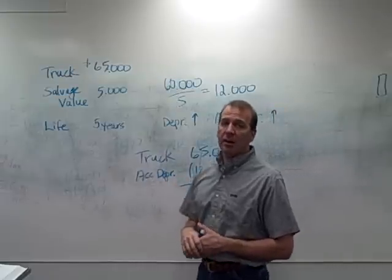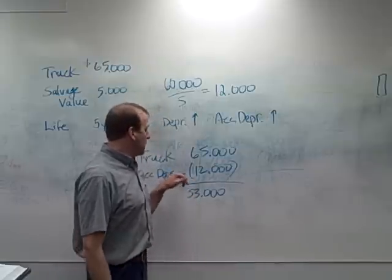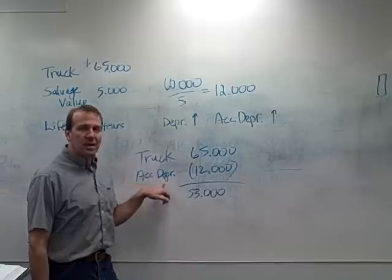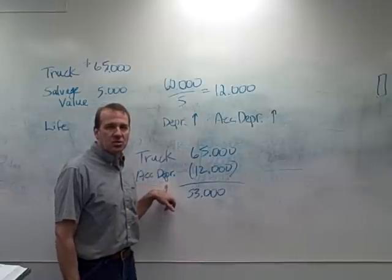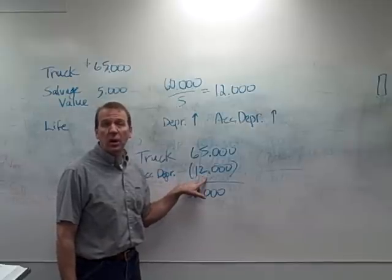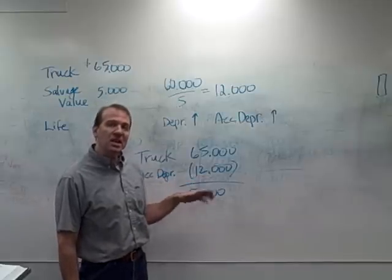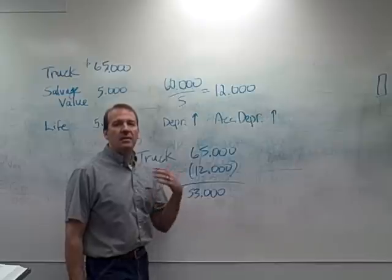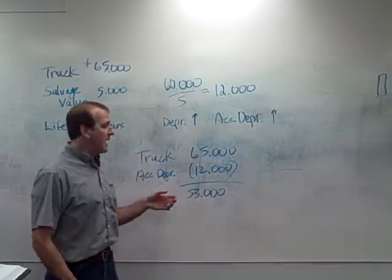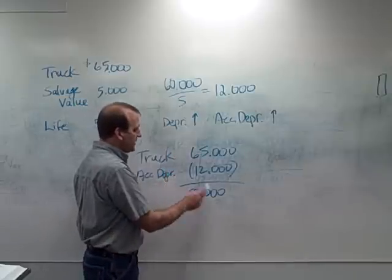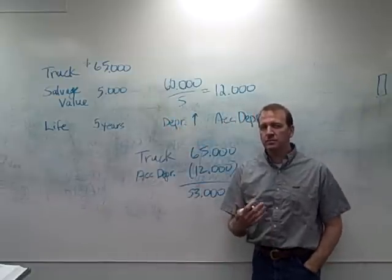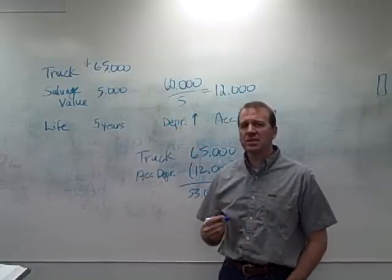The accumulated depreciation account offsets the truck balance. So in year one, with $12,000 of depreciation, the book value — the net realizable value — is $53,000. People like to see the value of the truck and the accumulated depreciation separately, which is why we keep these two accounts separate. It's called accumulated depreciation because it keeps building up — year two it's $24,000, year three $36,000, year four $48,000, and year five $60,000, leaving us at $5,000 salvage value.